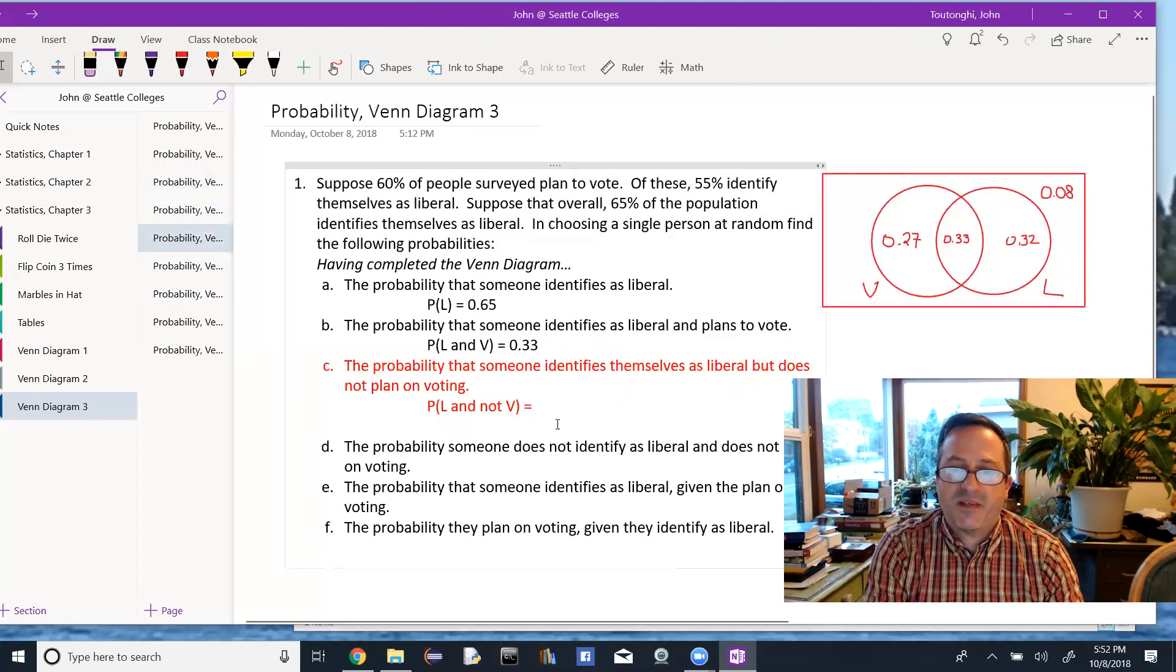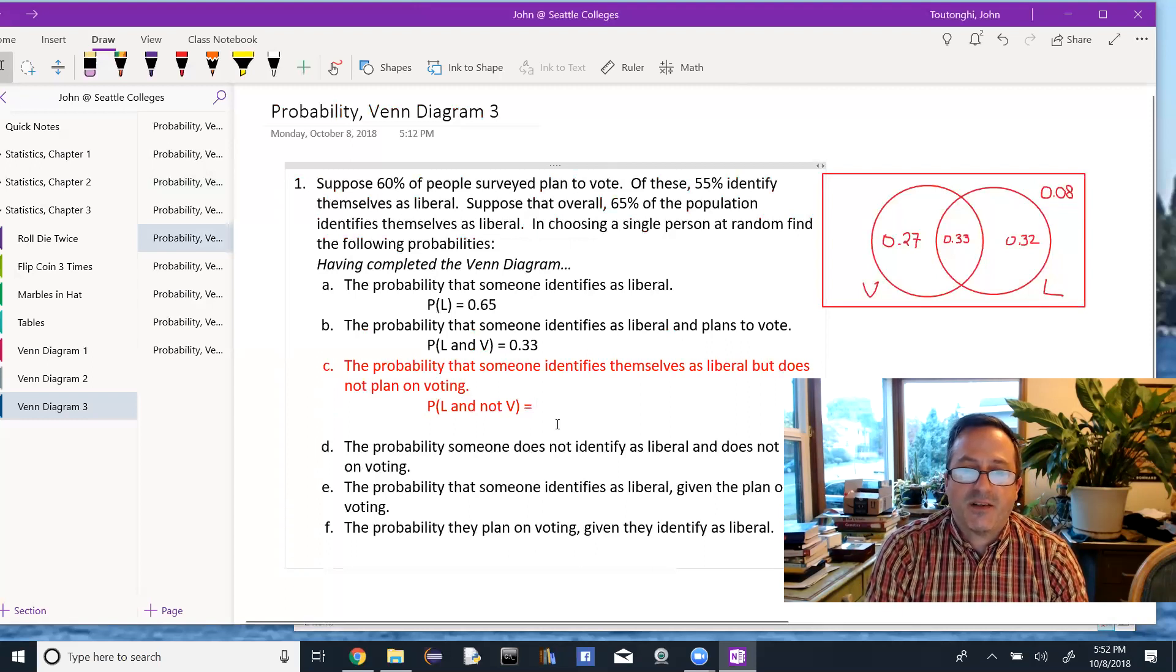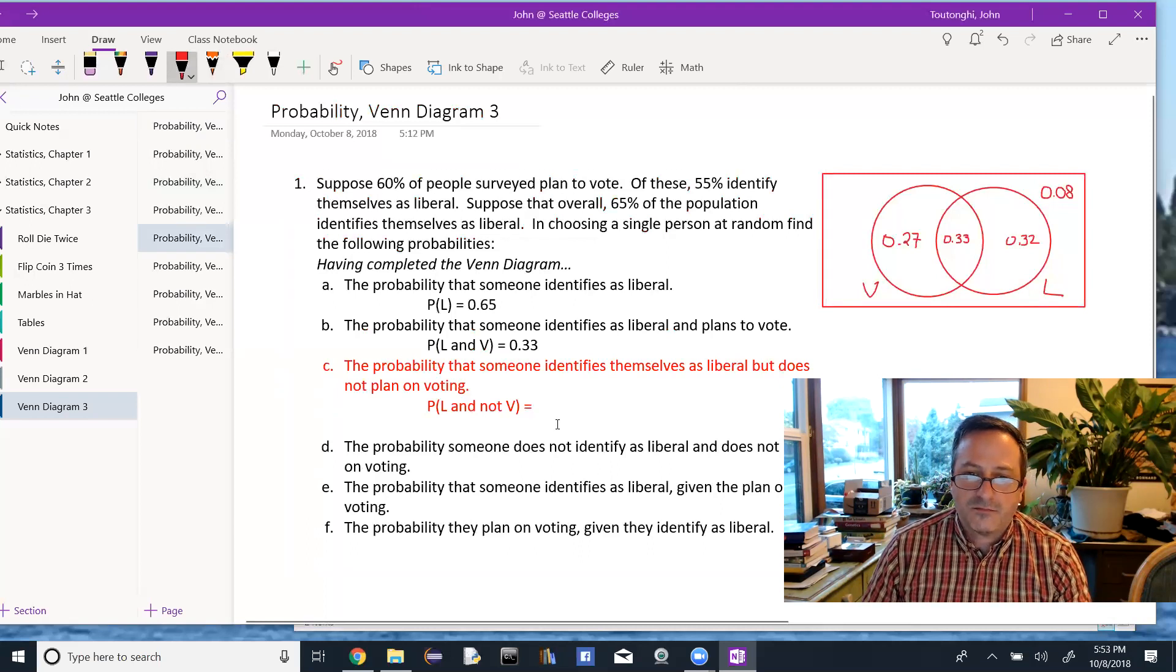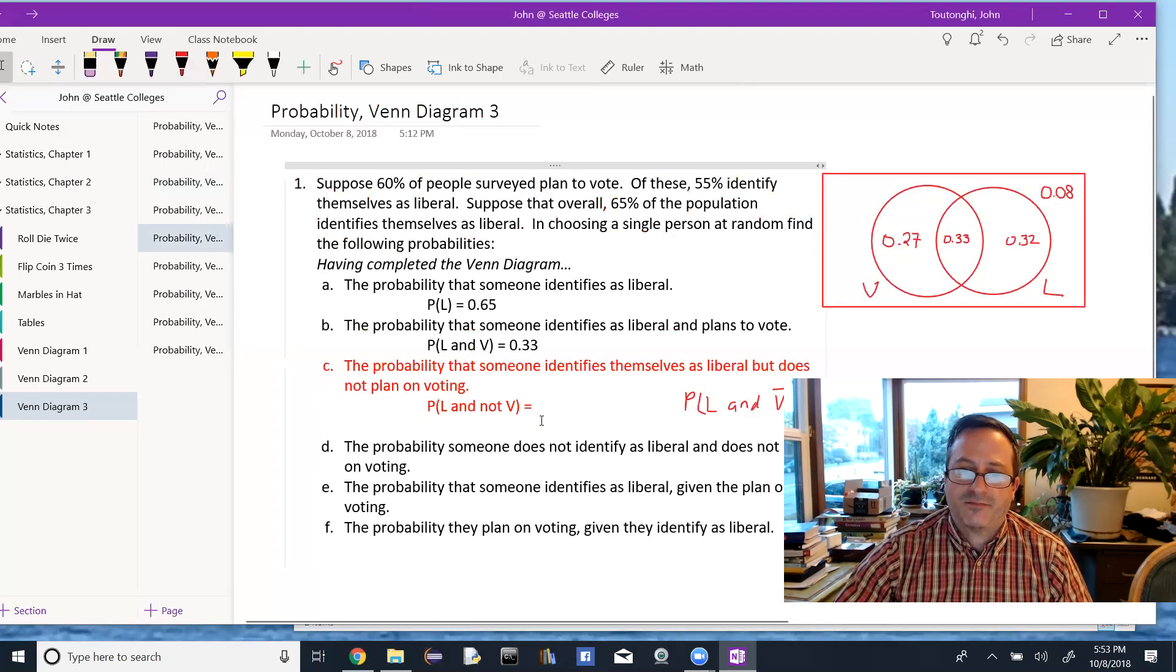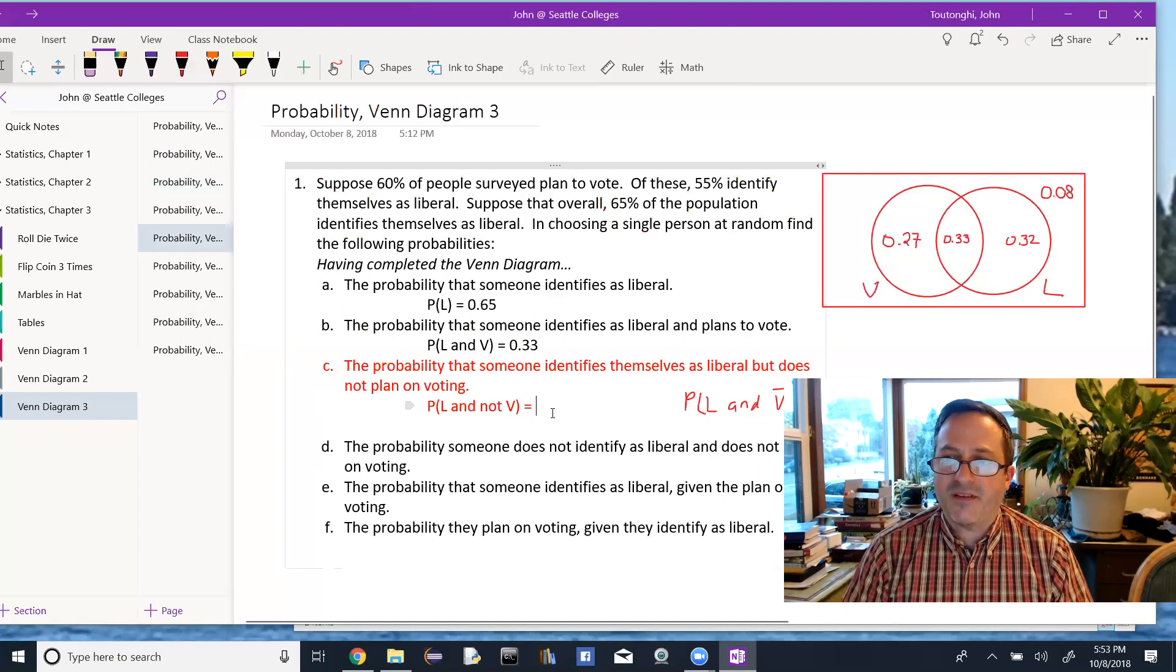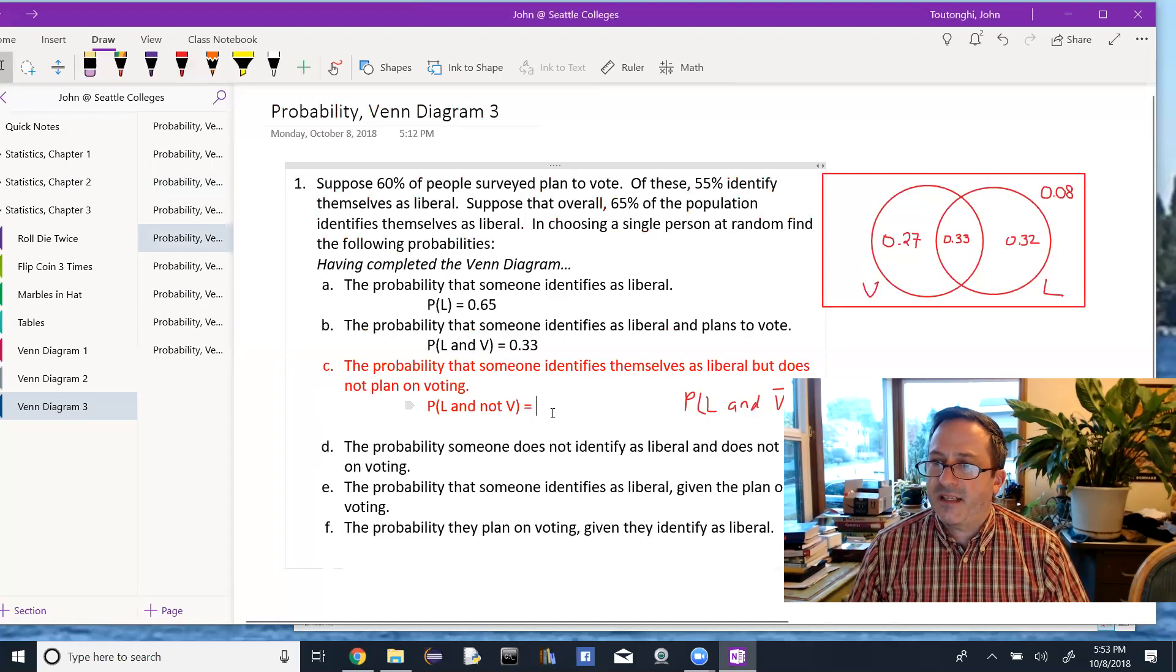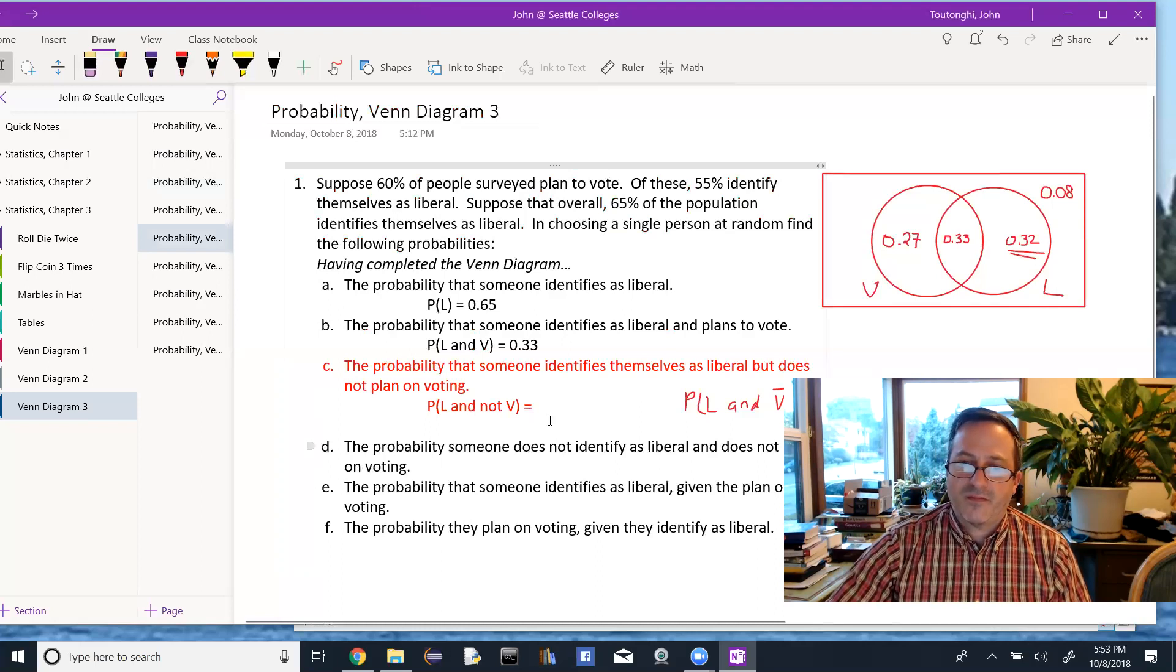In the next part, we're looking for the probability that someone identifies as liberal, but does not plan on voting. I could write this as the probability of L and not V. Or I can just write not V. We pick that from the Venn diagram. Who is in L but not in V? It's these 32% here. So that's our result, 0.32. Kind of nice. Everything's already a percentage for us.